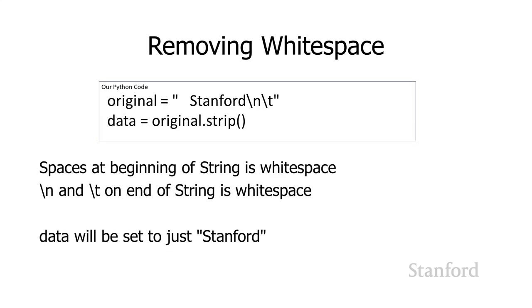For example, suppose we have a string stored in the variable original with a bunch of spaces, followed by 'Stanford', followed by a \n, followed by a \t. Both the spaces and the \n and \t are all white space. If I create a new variable called data and store original.strip() in it, that removes white space from both sides — it removes the spaces at the beginning and removes the \n and \t at the end. So data will store just the string 'Stanford', without the spaces, newline, or tab.